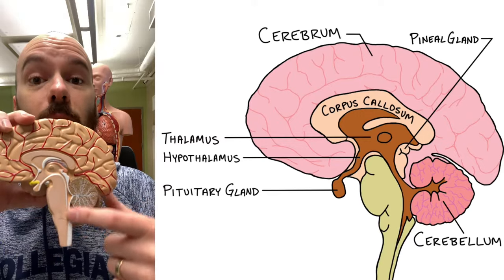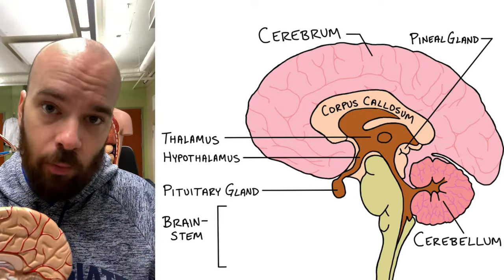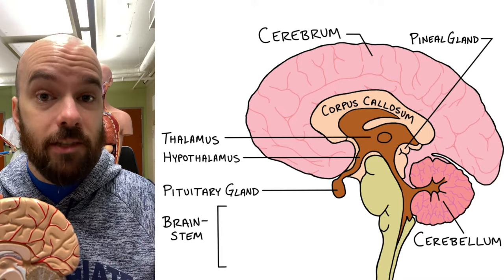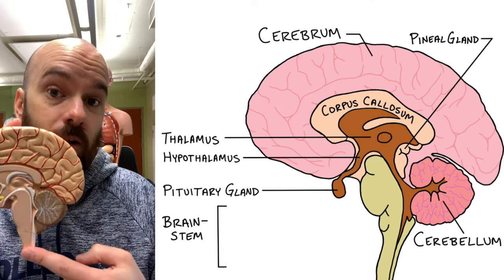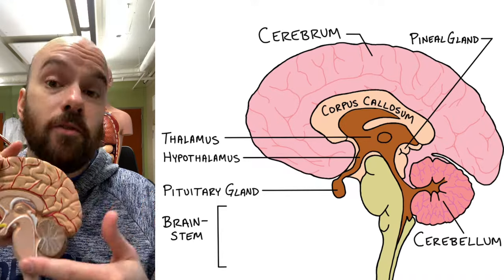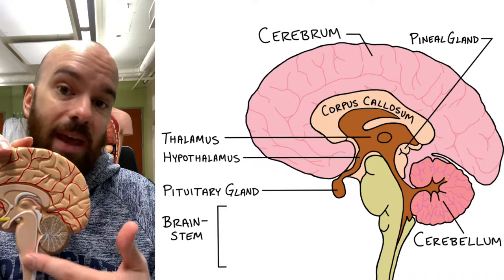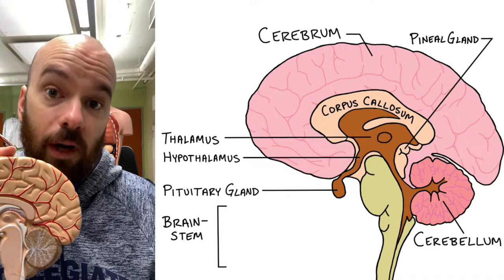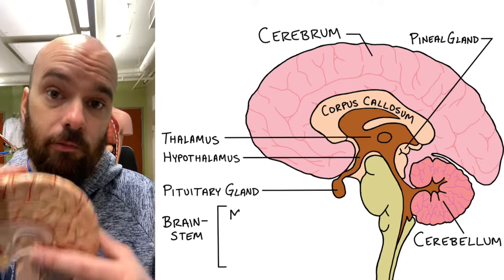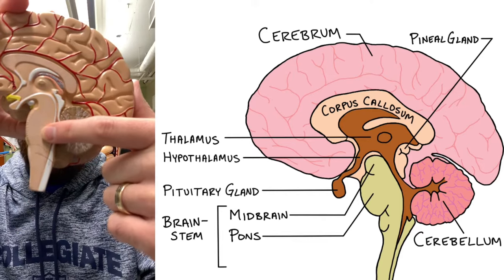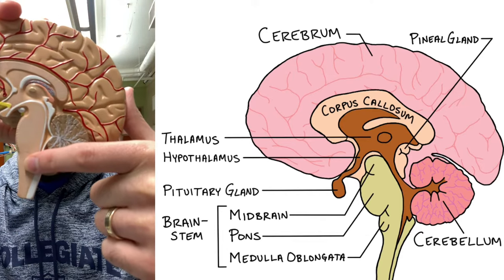Inferior to all of that, we have the brainstem. The first function of the whole brainstem is to be a pathway for signals to travel from the spinal cord up through to the rest of the brain — by their location, signals have to pass through the brainstem to get everywhere else. The brainstem has three parts: the midbrain, the pons, and the medulla oblongata.